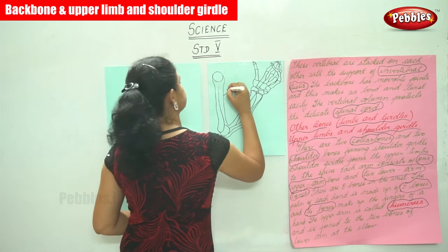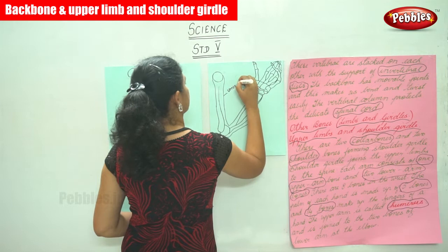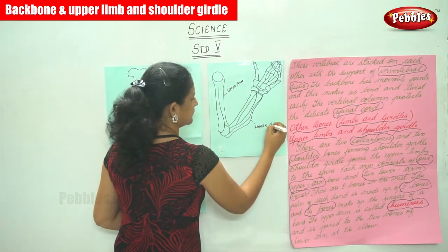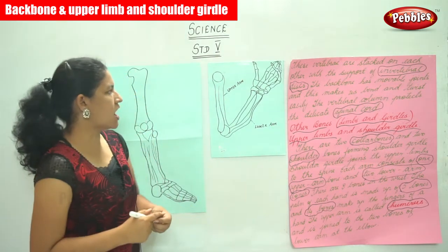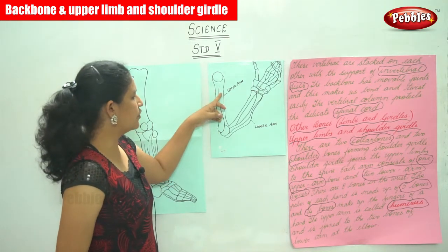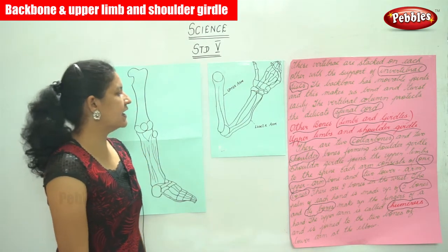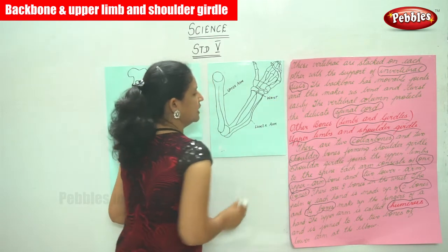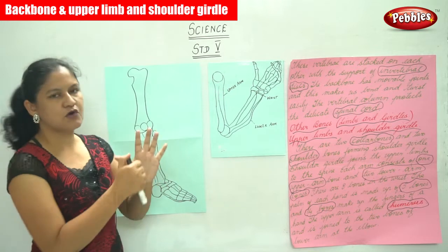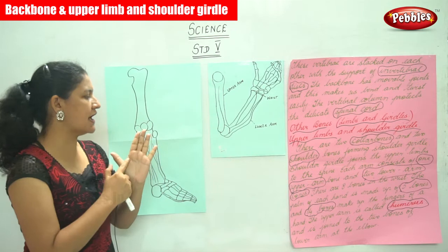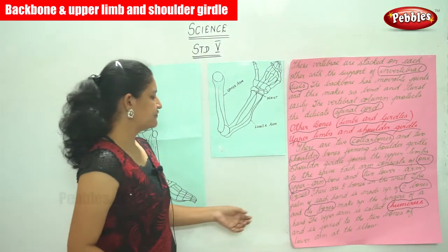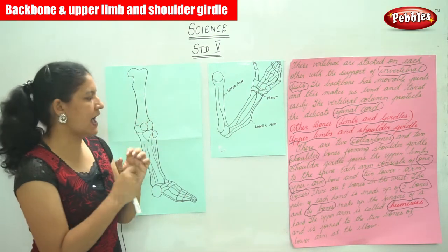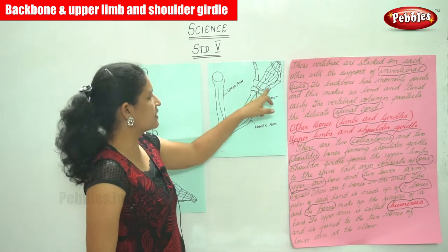This is the upper arm, and these are the lower arm bones. Each arm consists of one upper arm bone and two lower arm bones. There are eight bones in the wrist. The palm of each hand is made up of five bones, and fourteen bones make up the fingers of a hand.